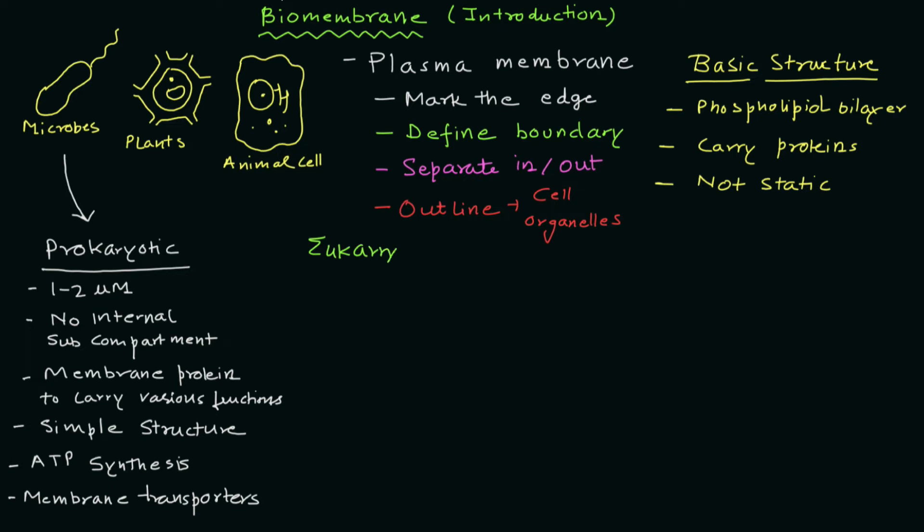Now let's talk about eukaryotic biomembranes. In case of eukaryotic organisms, first point is ATP generation is not there. Second, these biomembranes also contain protein molecules that perform various functions, including selective transport.